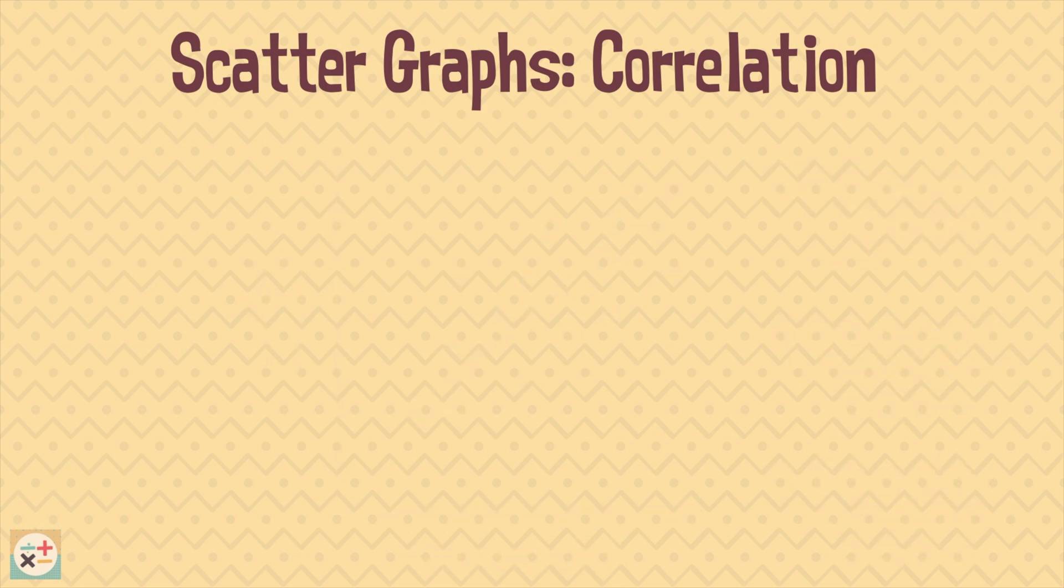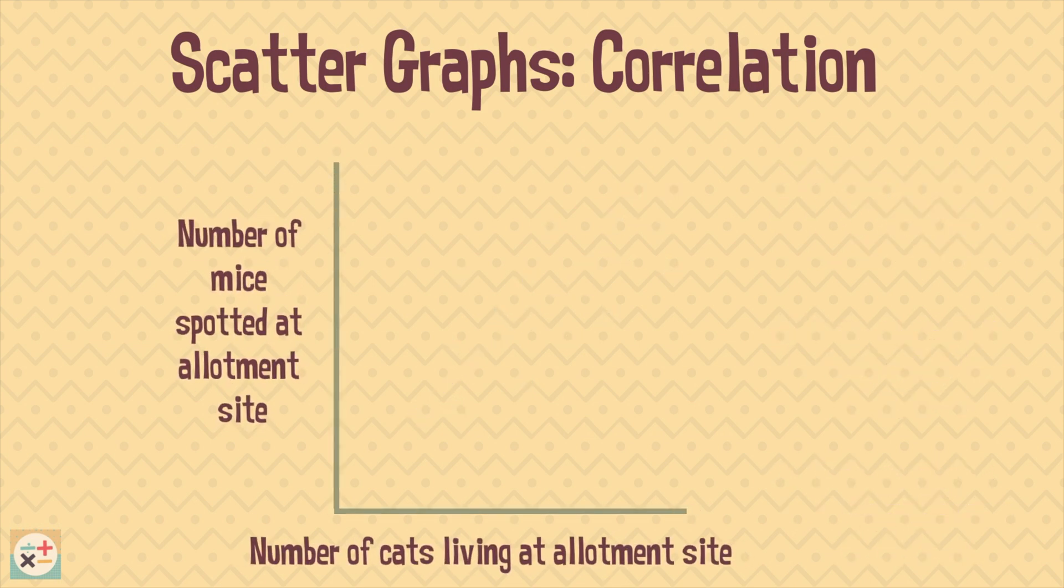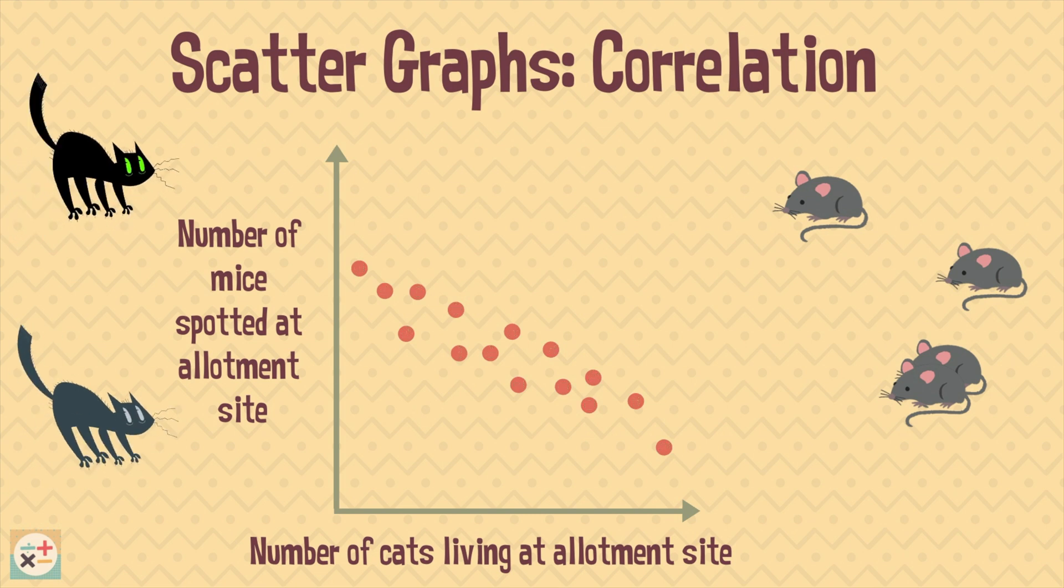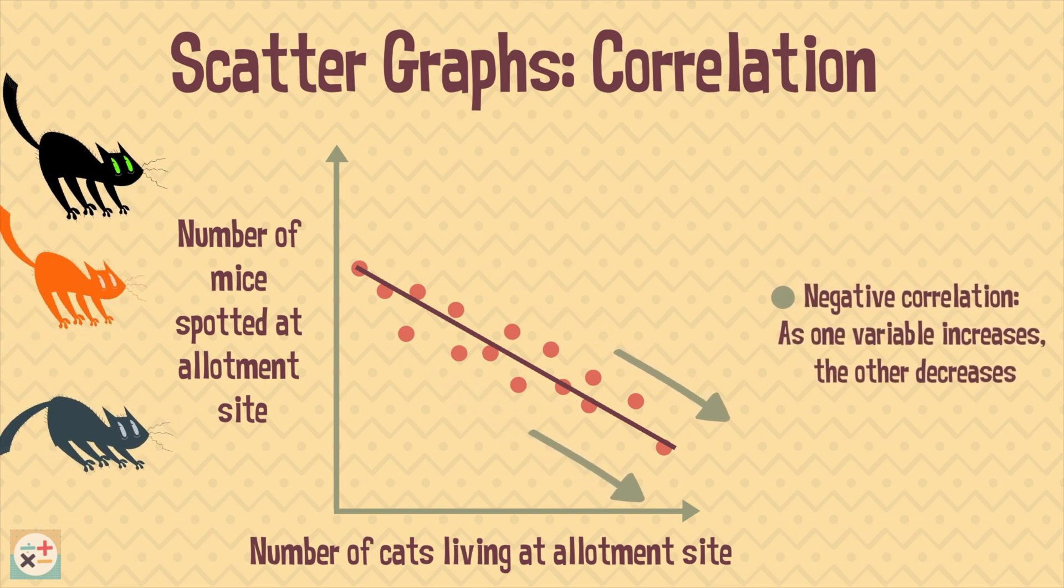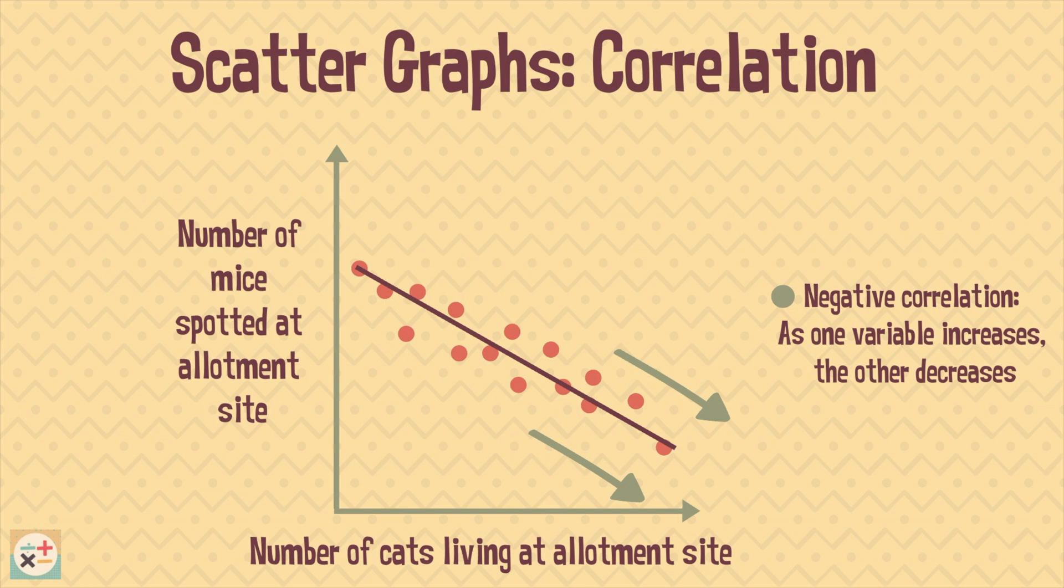Now let's have a look at another example. This scatter graph shows that as the number of cats living at an allotment site increase, the number of mice decrease. This shows a negative correlation. In particular, a strong negative correlation. As one variable increases, the other decreases.